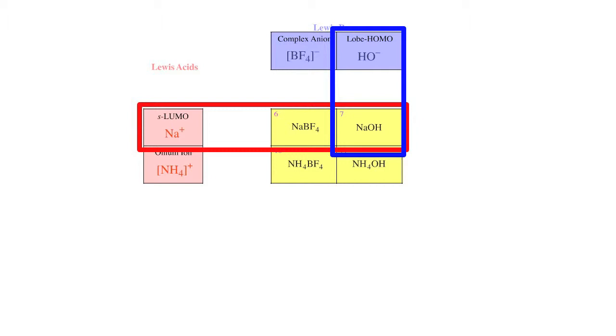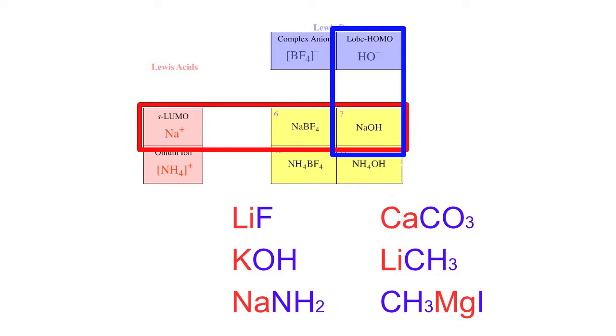Type 7 complexes constitute many of the bases and nucleophiles of organic chemistry such as lithium fluoride, potassium hydroxide, sodium amide or sodamide, calcium carbonate, methyl lithium, and the Grignard reagent methyl magnesium iodide.